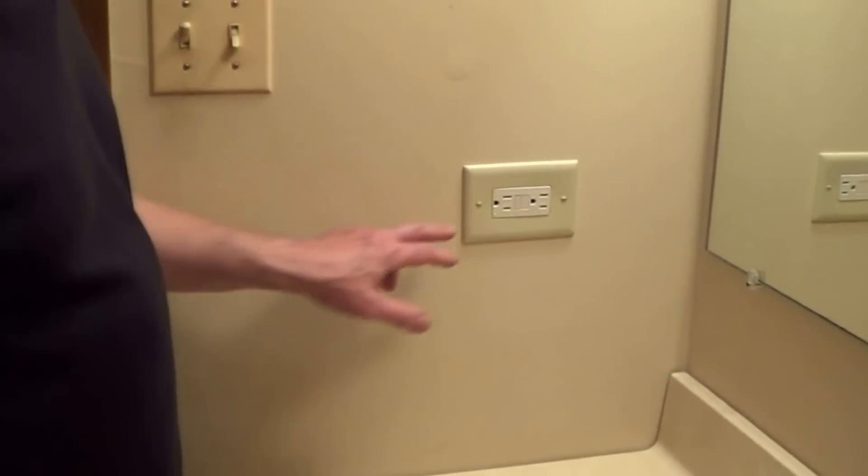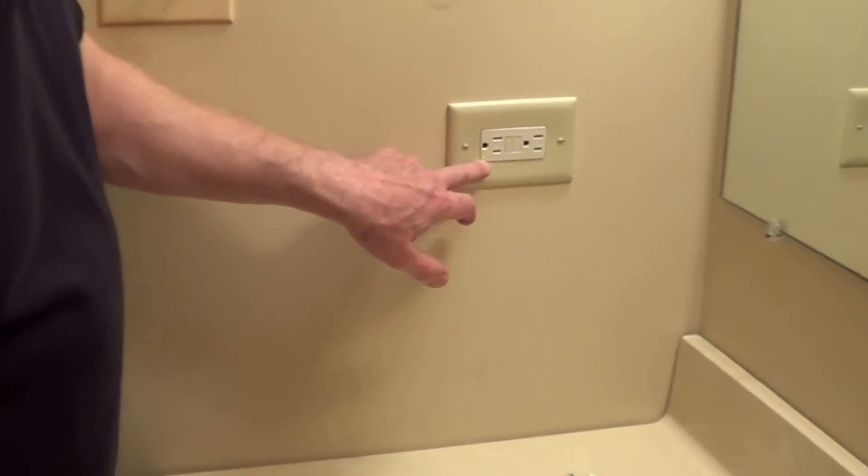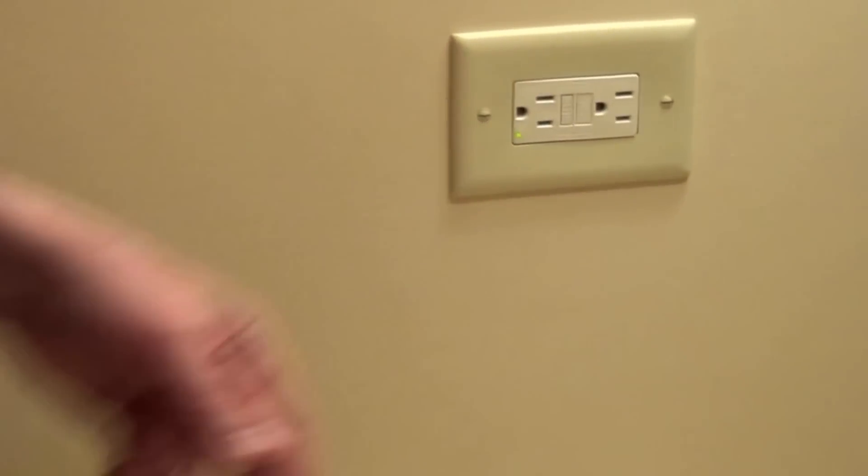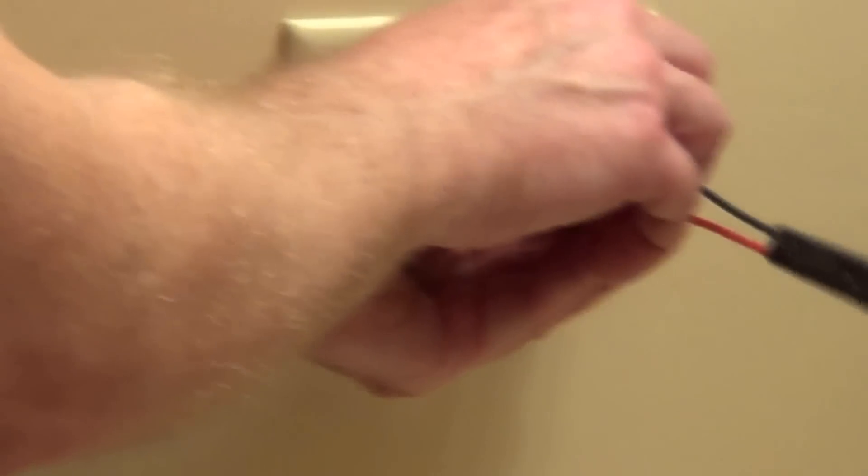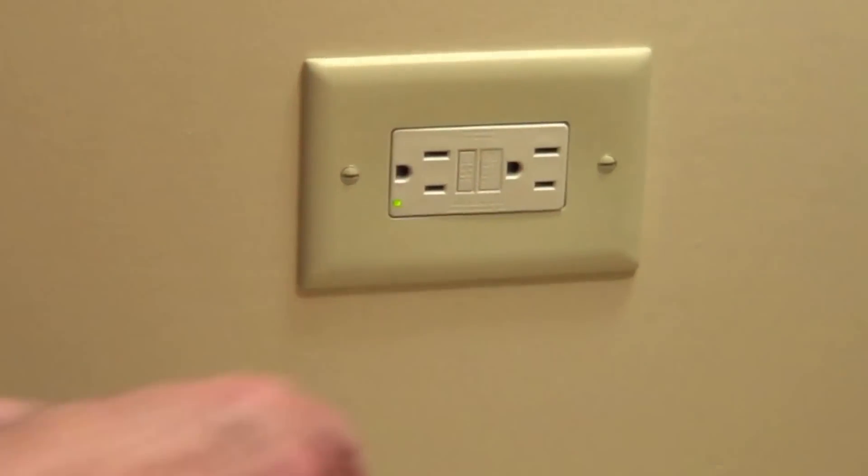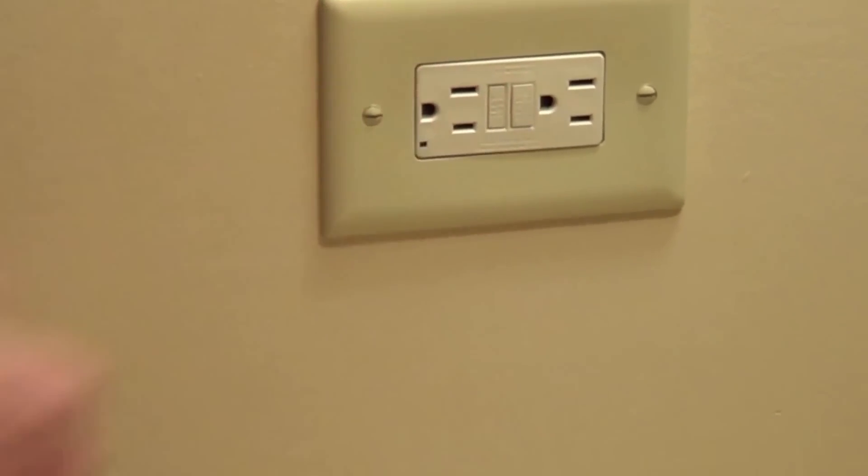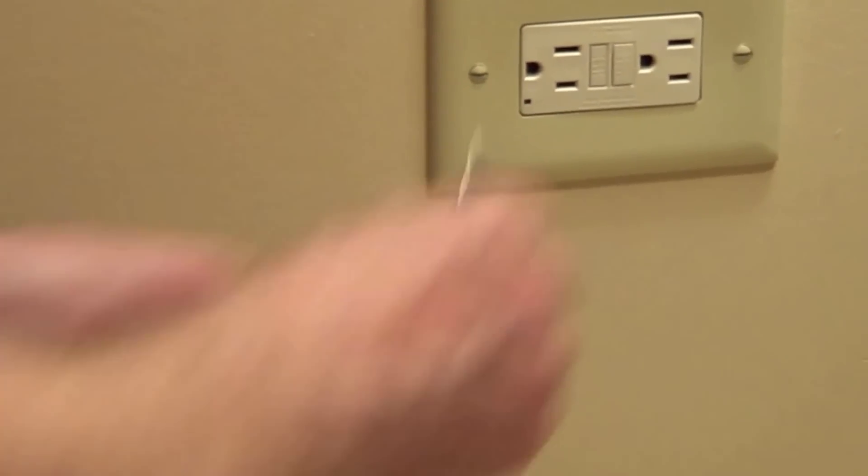The power's back on. In this model there's a small LED light that shows you that there's power to the outlet. You would always want to double check both sides of the outlet - in this case it's on. Then there's a test button that you can press and you can see the power is off.